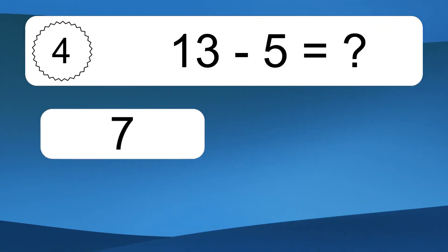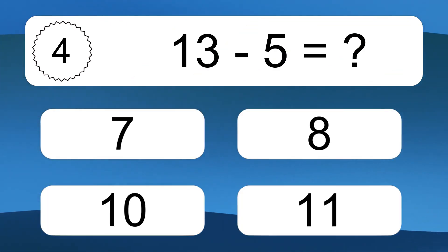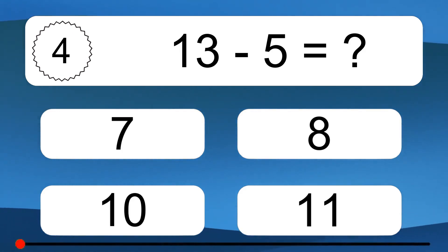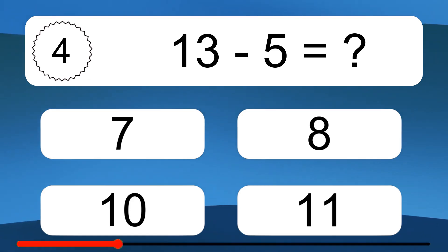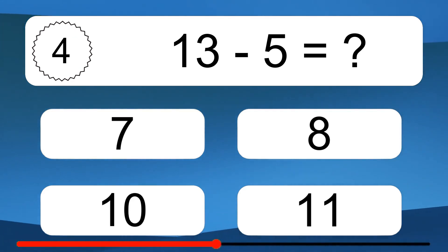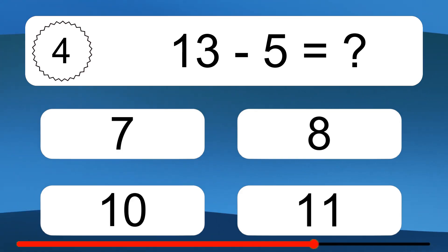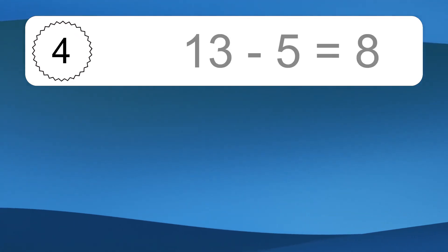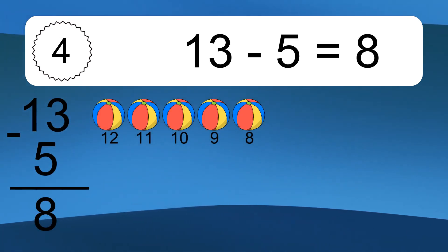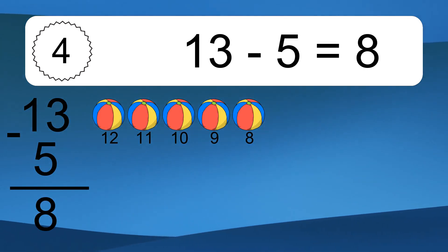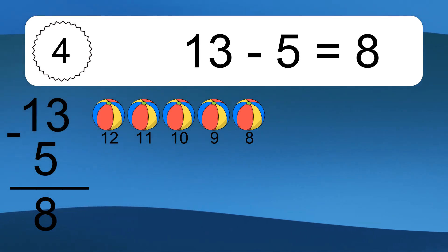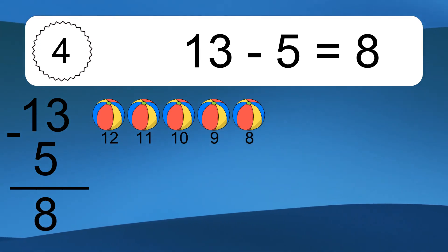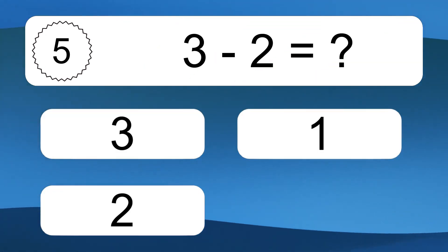13 minus 5 equals what? 13 minus 5 equals 8. Let's count it. 12, 11, 10, 9, 8.